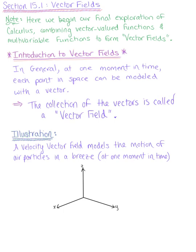To get us started, in general, at any one instant or moment in time, each point in space can be modeled with a vector. And the collection of these vectors is called a vector field.